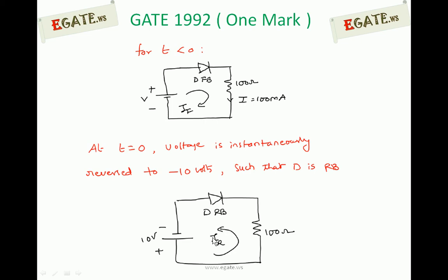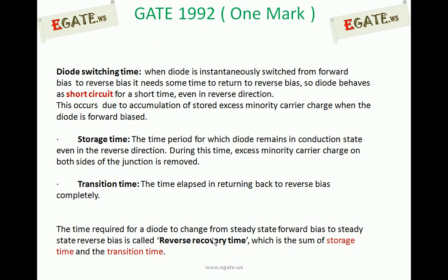The voltage across the diode is changed instantaneously, moving from forward bias to reverse bias. This question is based on diode switching characteristics. When a diode is instantaneously switched from forward bias to reverse bias, it needs some time to return to reverse bias. Meanwhile, the diode behaves as a short circuit for a short duration, even under reverse bias.